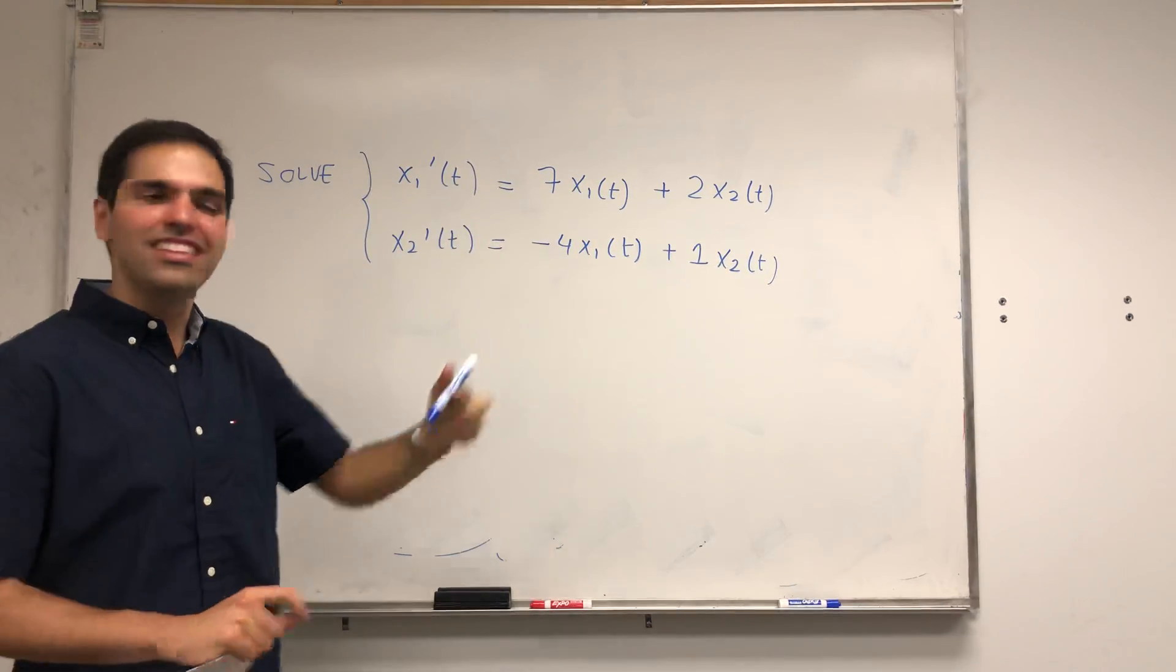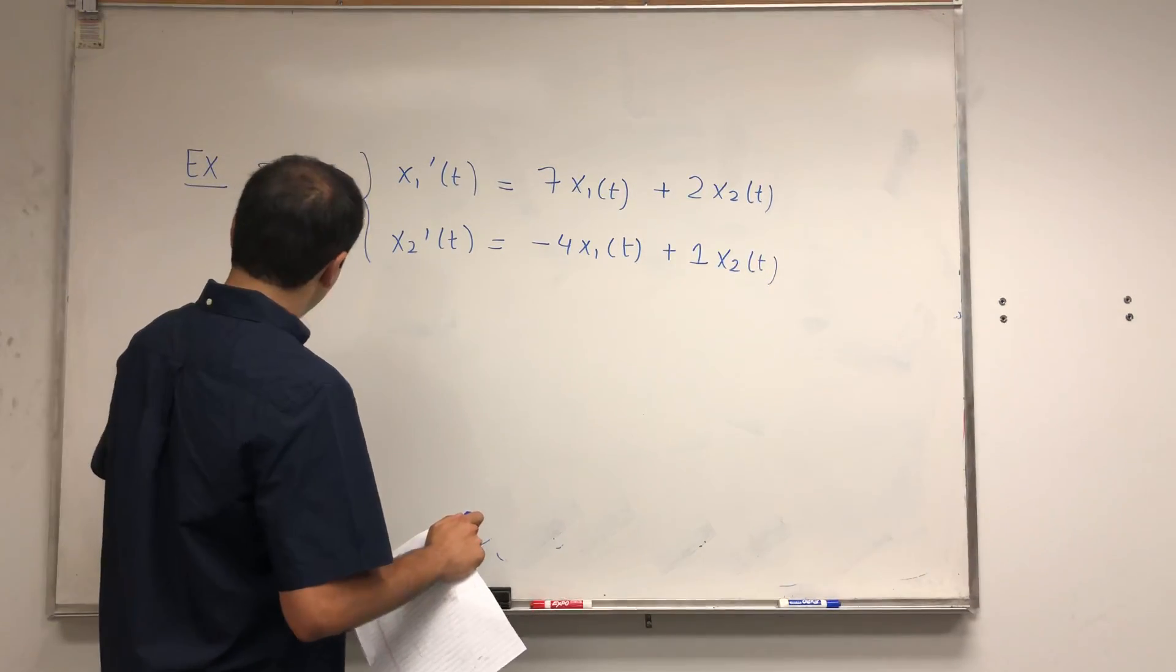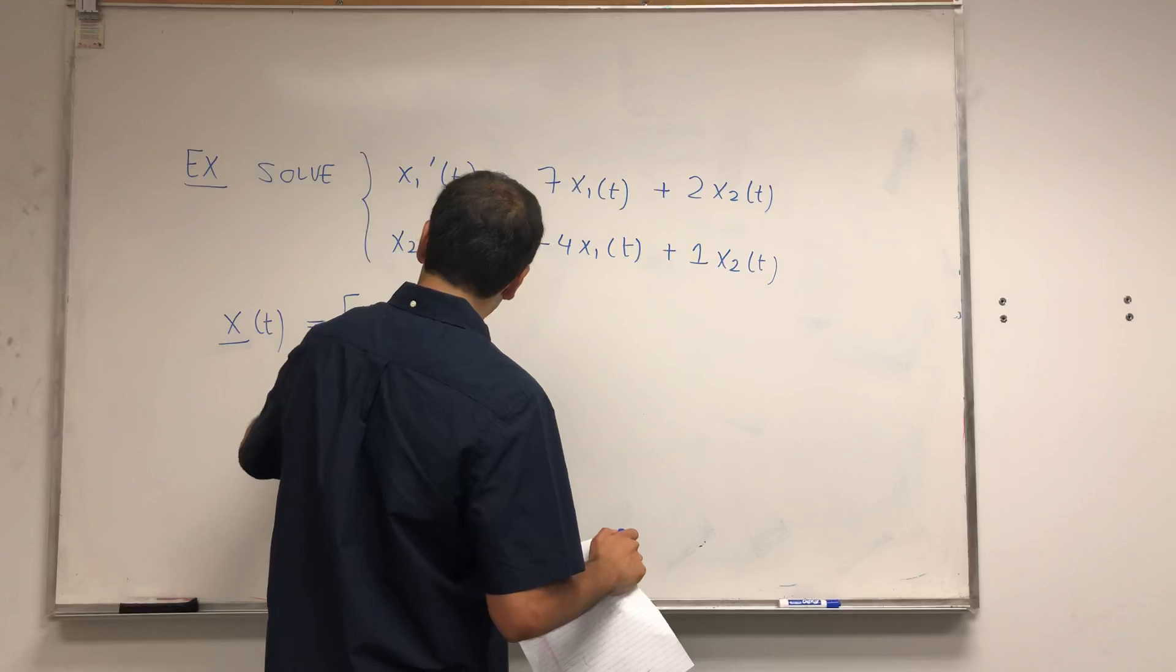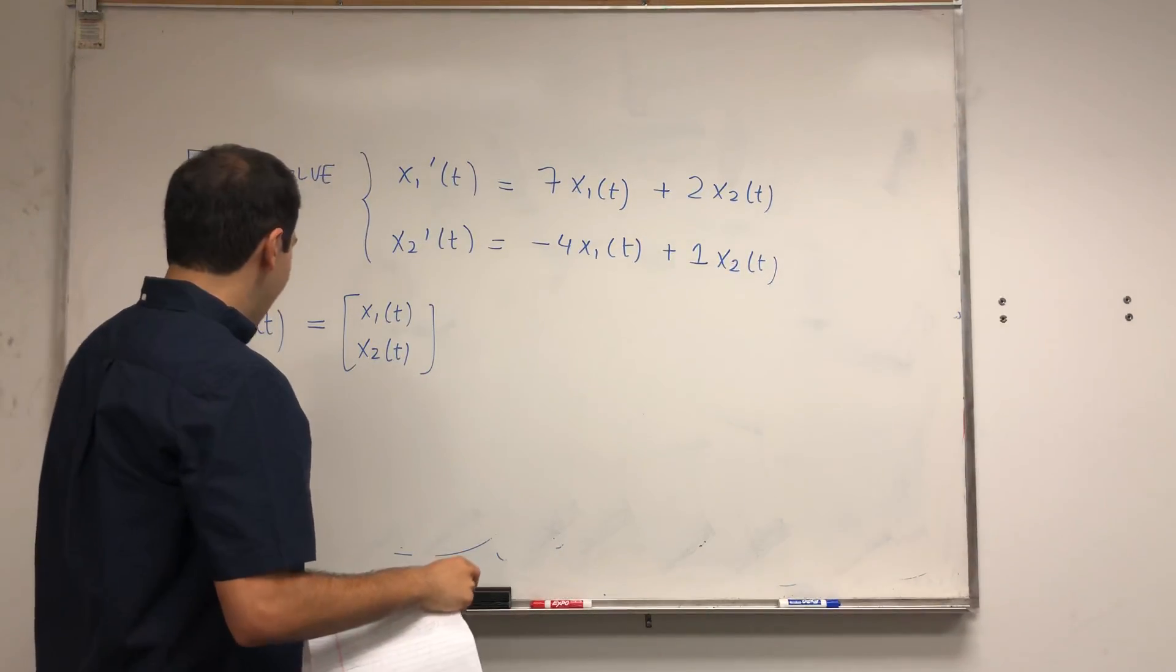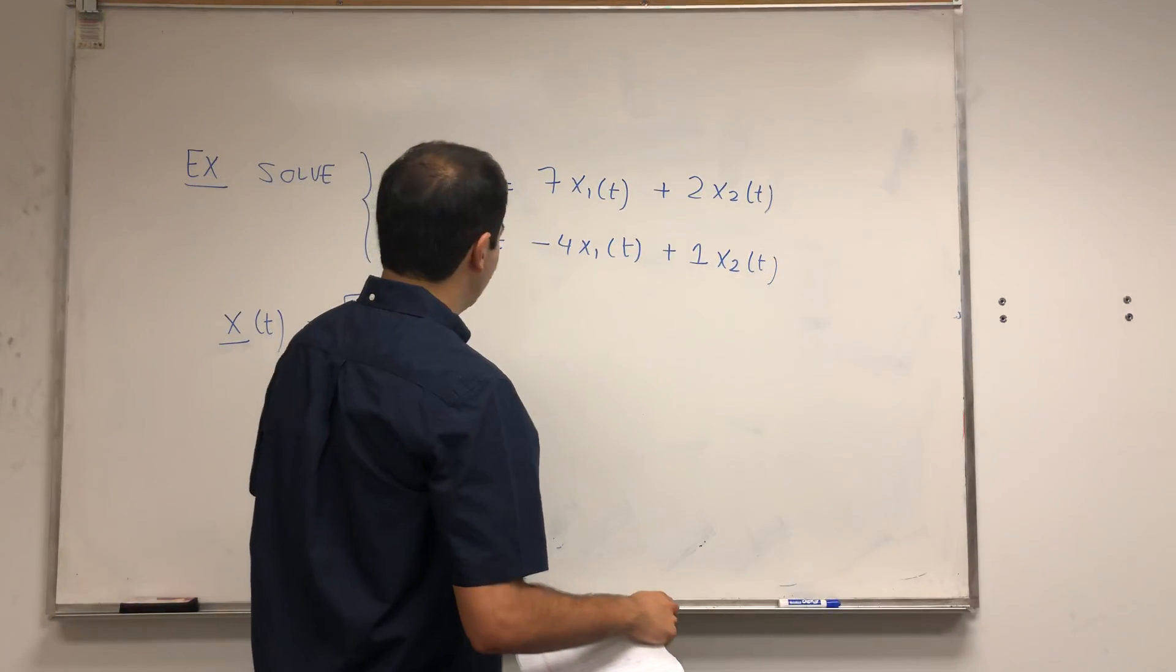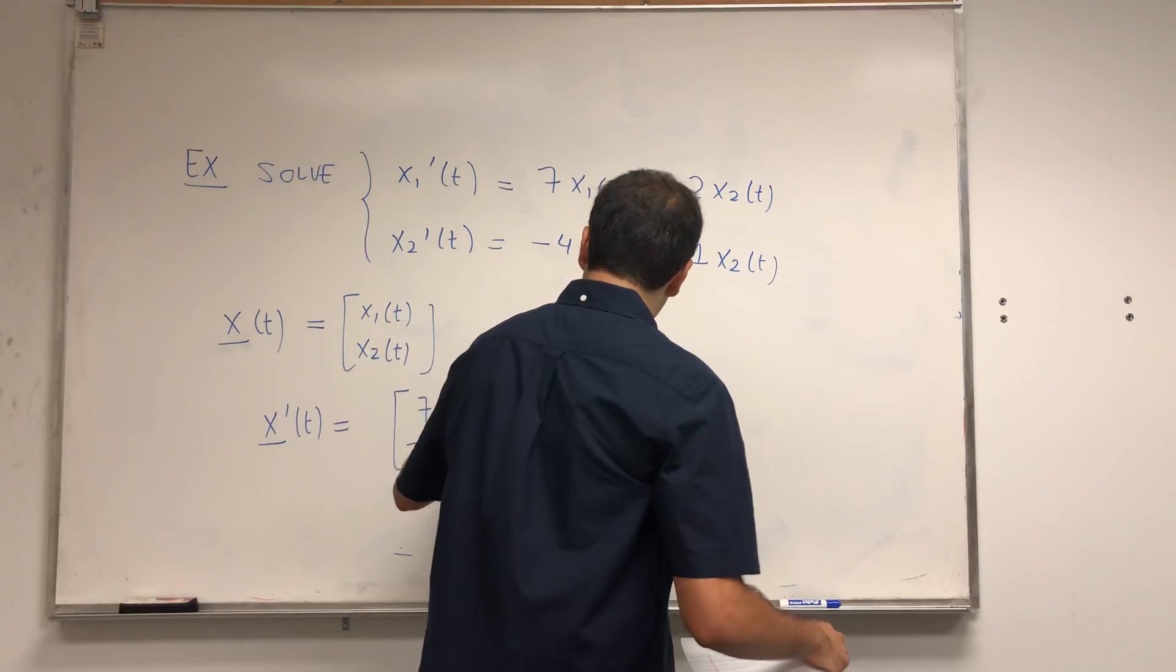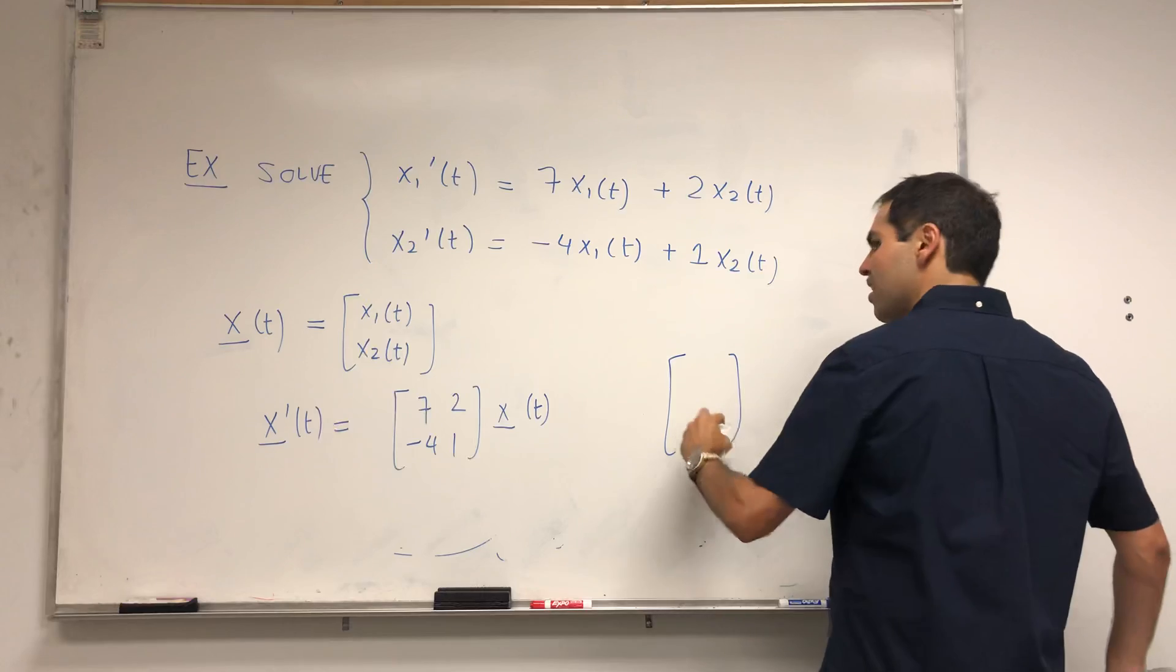As I said, we want to use some linear algebra, so let's rewrite this in terms of linear algebra. First, if bold face x of t is [x1 of t, x2 of t], then we can rewrite this system as x prime of t equals [7, 2; -4, 1] times x of t.